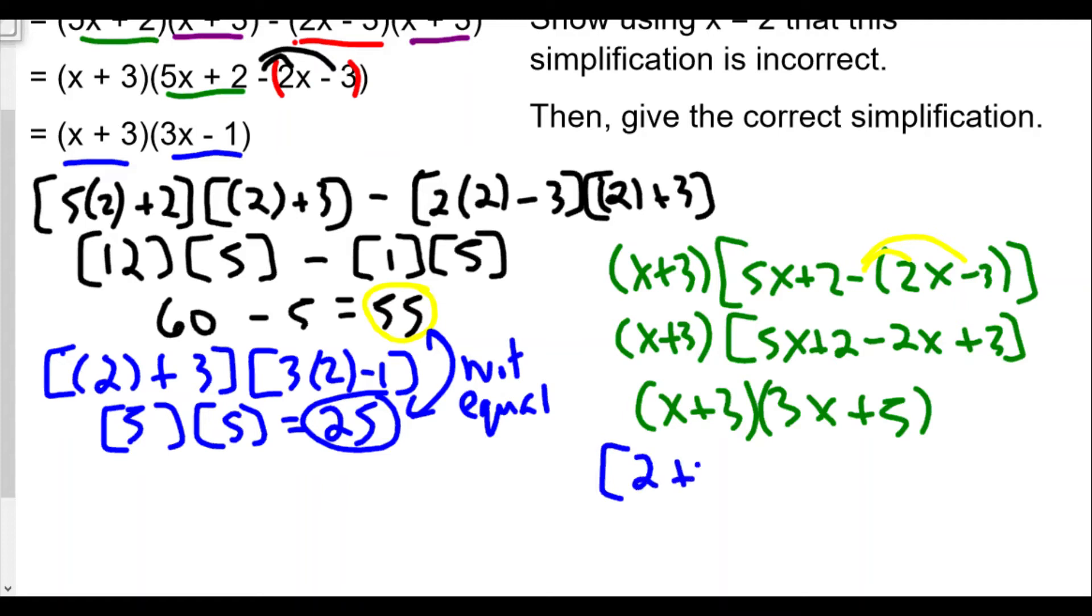Now to show that we should get 55, we're going to plug in here. So (2 + 3)(3 times 2 + 5), we hope we should get 55 here, right? This is 5. 3 times 2 is 6 plus 5 is 11. 5 times 11 is 55.